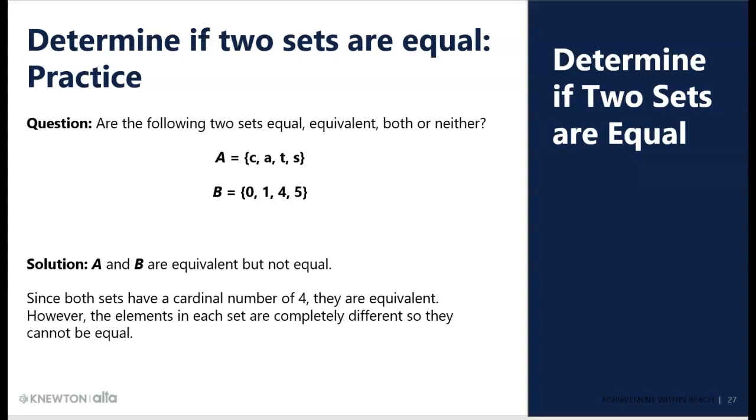So, are the following two sets equal, equivalent, both, or neither? The first thing I do is count. One, two, three, four elements in A, one, two, three, four elements in B. They might be equal because they are equivalent, but then I look at them. I have letters in A, and I don't have a C in set A and don't have a C in set B. That's as far as I need to go. I just need one element that's different. So, they're not equal, but they are equivalent.